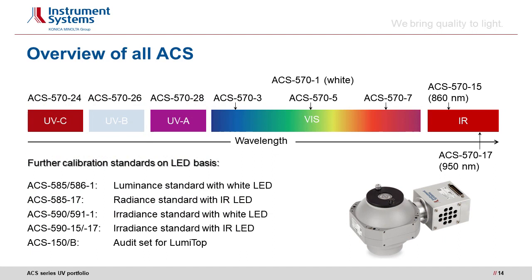Finally, I would like to show you an overview of all ACS models available. Besides the white ACS-570-1, there is the ACS-3 model for the blue visible range, ACS-5 for the green range and ACS-7 in the red range. Instrument Systems also offers calibration standards in the IR range with peak wavelengths around 860 and 950 nm. In the UV range, there are the three new UV ACS models that cover the UV ranges A, B and C as explained in detail in this presentation. Further special calibration standards on LED bases also exist, such as the ACS-585 or ACS-586 as a luminance standard for white LEDs.